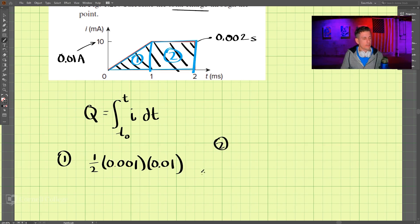and then let's do two. Two is this rectangle where we have from here to here, this is one millisecond. And the height here is this 0.01 amps.